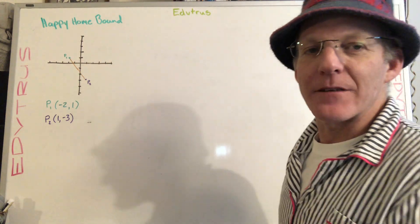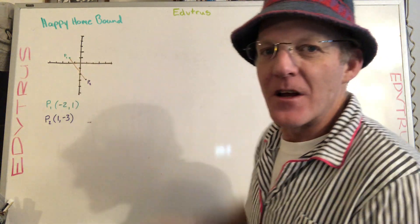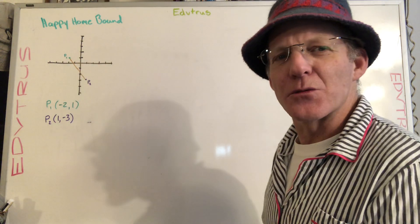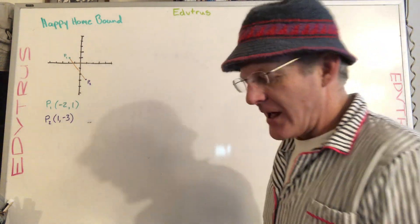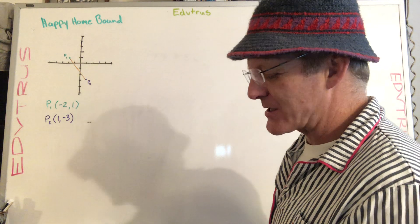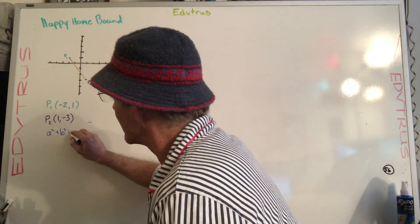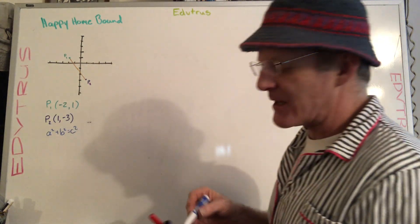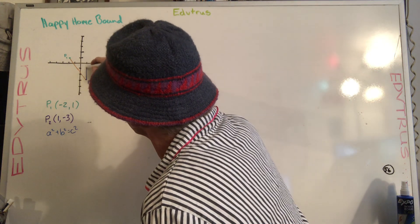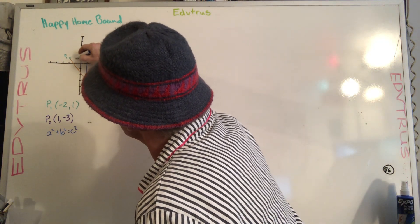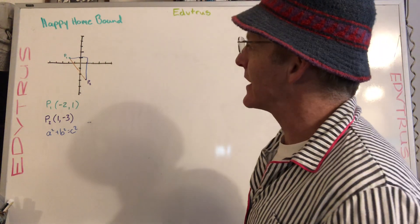And what we want to do is we want to find the distance between the two points. So what we've got to do is realize that all we're really doing is a fancy version of the Pythagorean theorem. A squared plus B squared equals C squared, as we recall. Remember that itself is just the way we remember the Pythagorean theorem. It's really the leg squared plus the leg squared equals the hypotenuse squared.